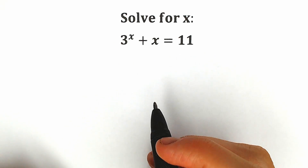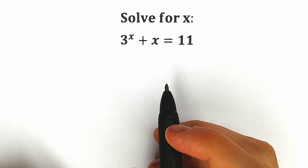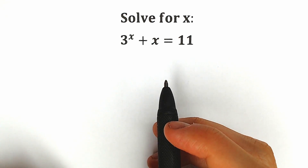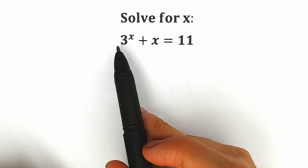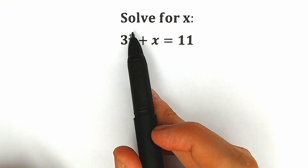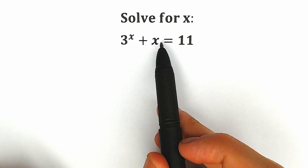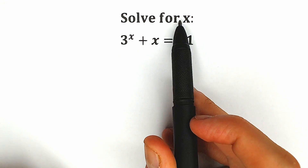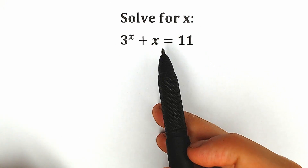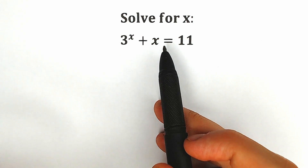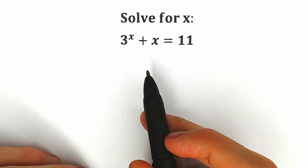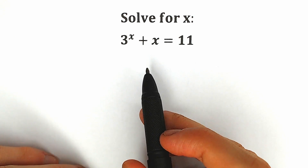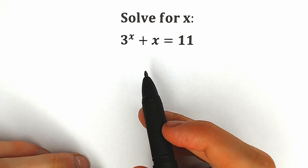Hello everyone, happy to see you here. Welcome back to my channel Higher Mathematics. Today we have a very interesting exponential equation: 3 to the x plus x equals 11, and we need to find x. Of course, you can easily pause the video and write a solution down in the comment section, and in a few minutes we will check our answers.